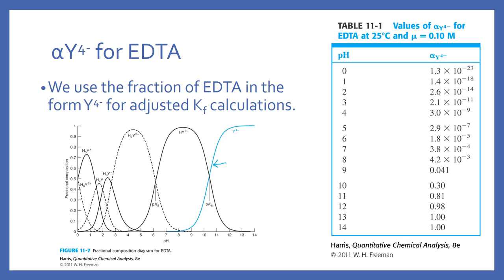This table shows that at pH 13 and 14, you have 100% Y4-. But once you're down to around pH 9, only about 4% of the EDTA is in that form, becoming increasingly smaller at lower pH.